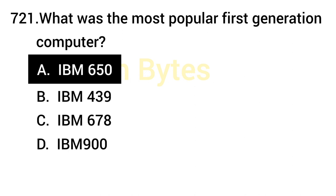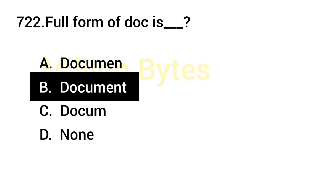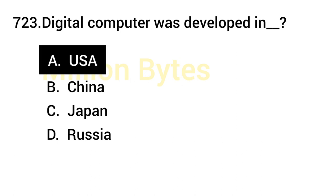What was the most popular first generation computer? IBM 650 was the most popular first generation computer. Full form of DOC is Document. Digital computer was developed in the USA.